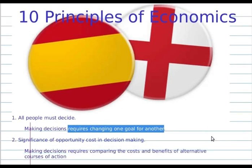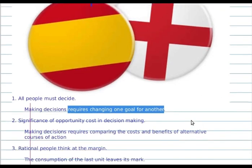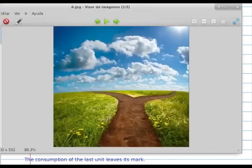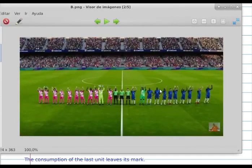The second principle: the significance of opportunity cost in decision making. Making a decision requires comparing the costs and benefits of alternative courses of action. For example, in this image, when beginning a football match you decide to support one of the two teams.